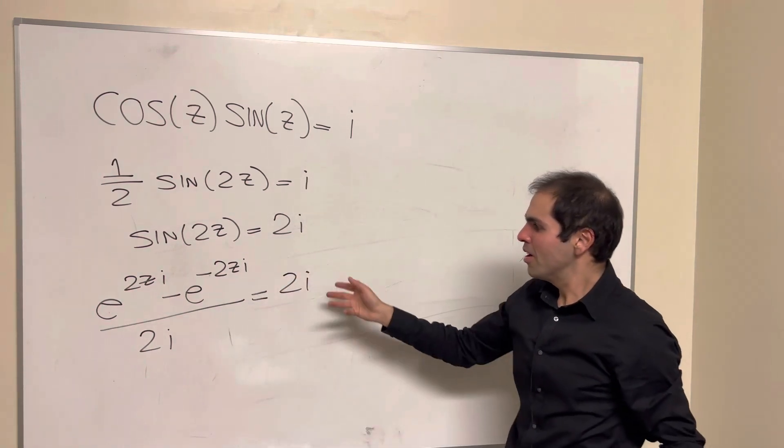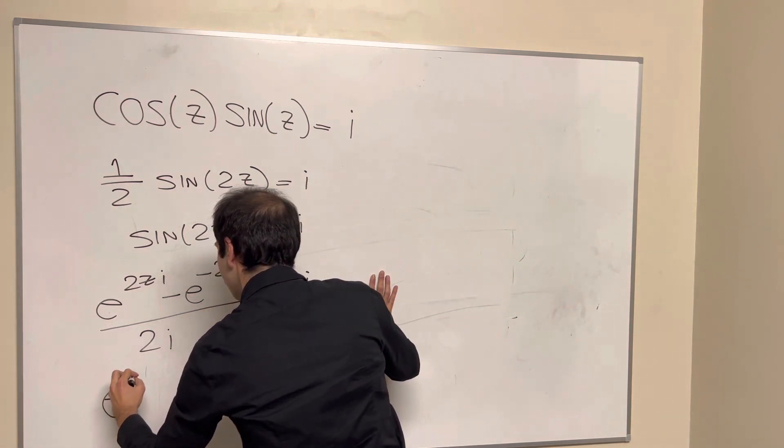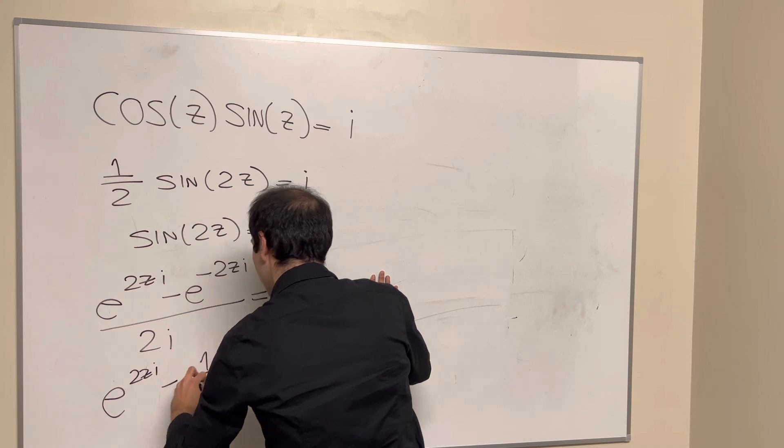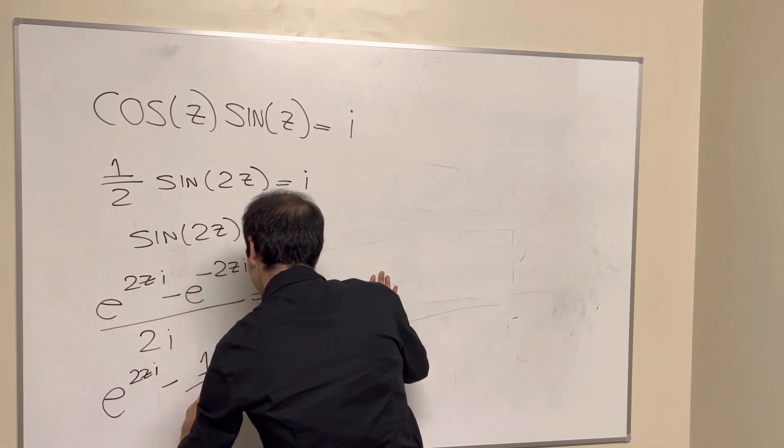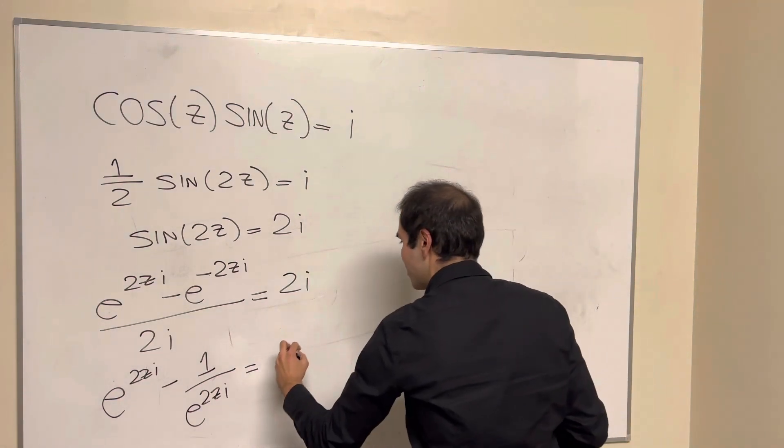And so cross-multiplying, this gives you e to the 2zi minus 1 over e to the 2zi equals 2i times 2i, so minus 4.